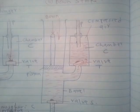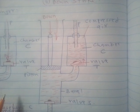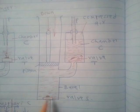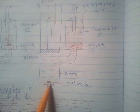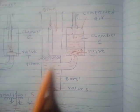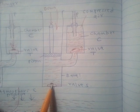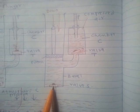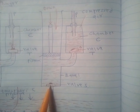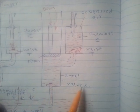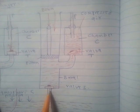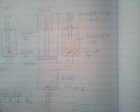During the downstroke, the plunger is moved down, which means the water above valve S is compressed. Due to the weight of the water above valve S and the weight of valve S itself, valve S closes — so water cannot move back into the well.